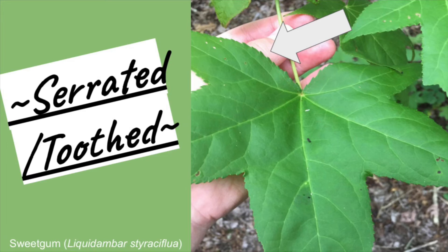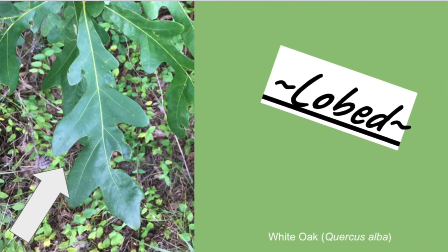This leaf has another margin characteristic — it is also lobed. Lobed is when the margins are deeply indented. This leaf has five lobes. Here's another example of a leaf that is lobed, except the margin is smooth, unlike the sweet gum that was serrated.